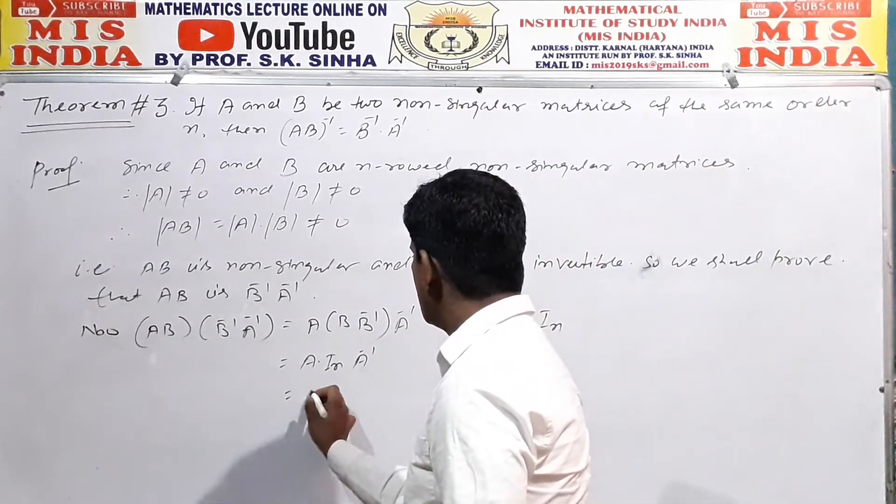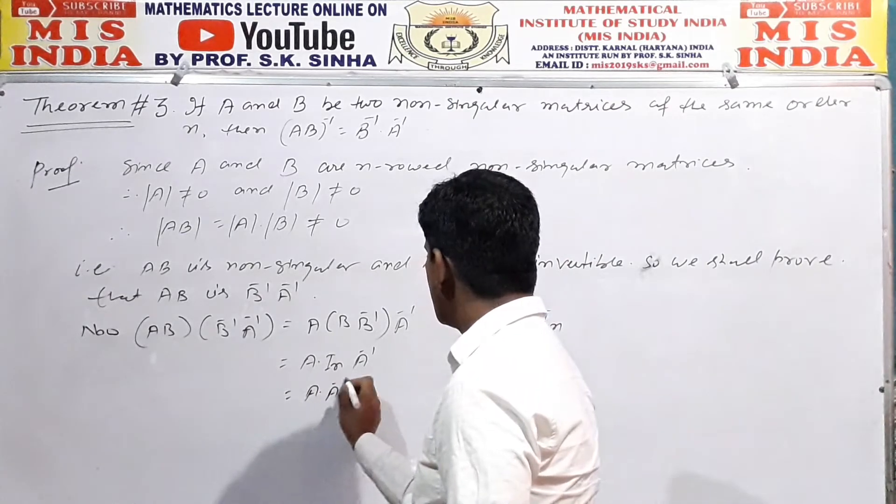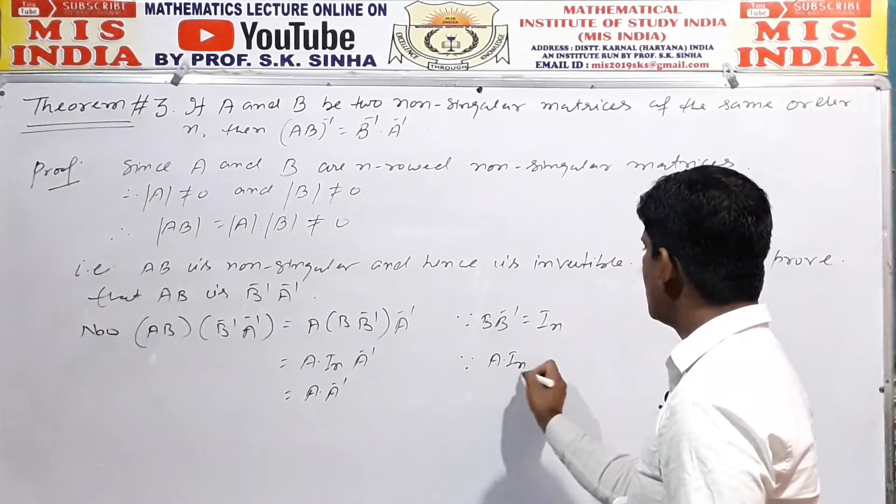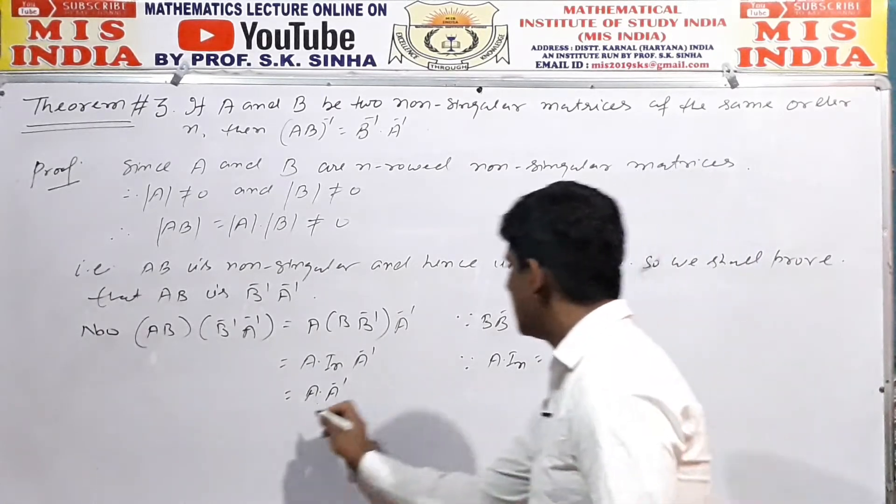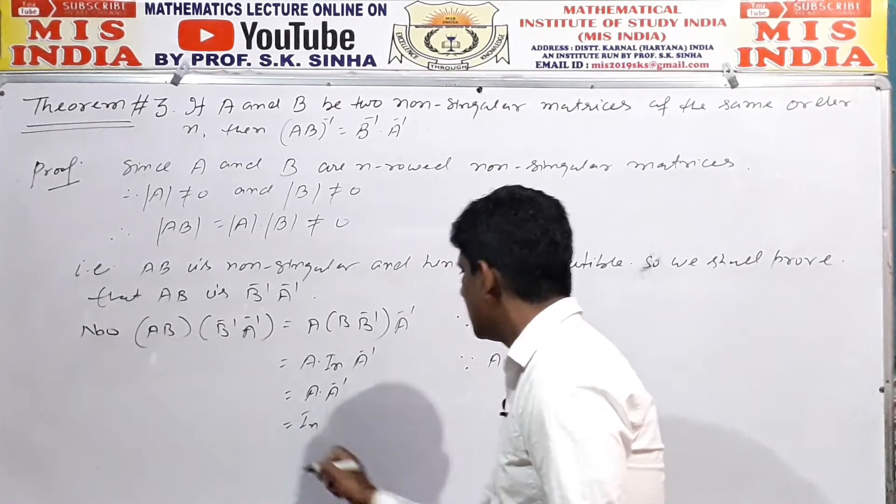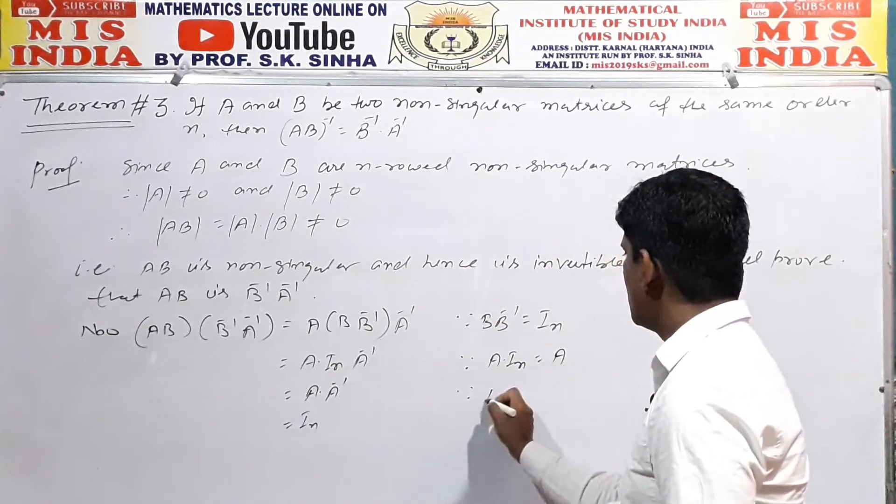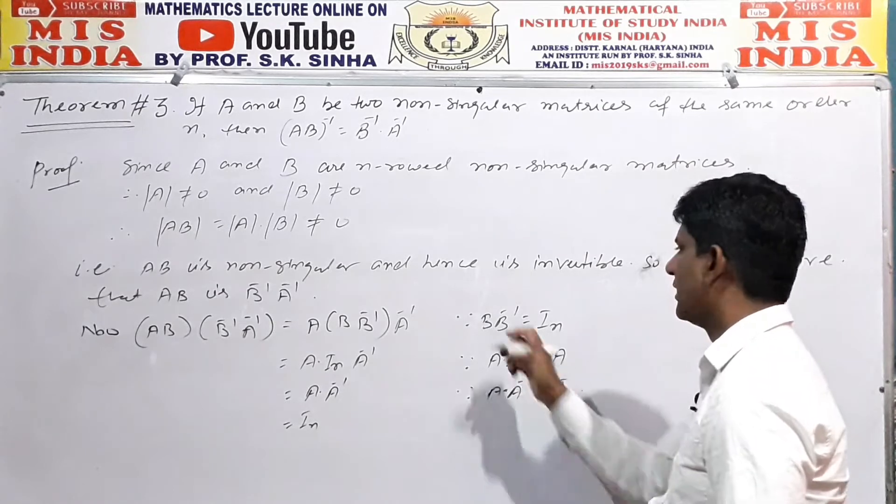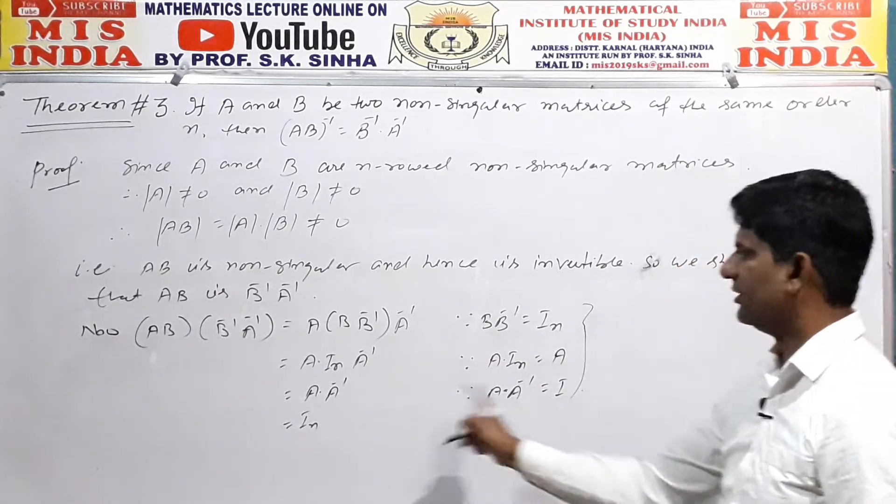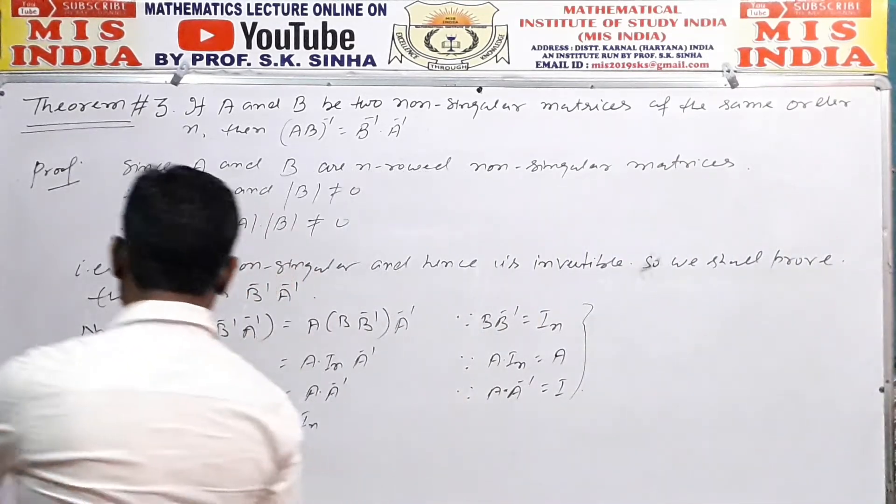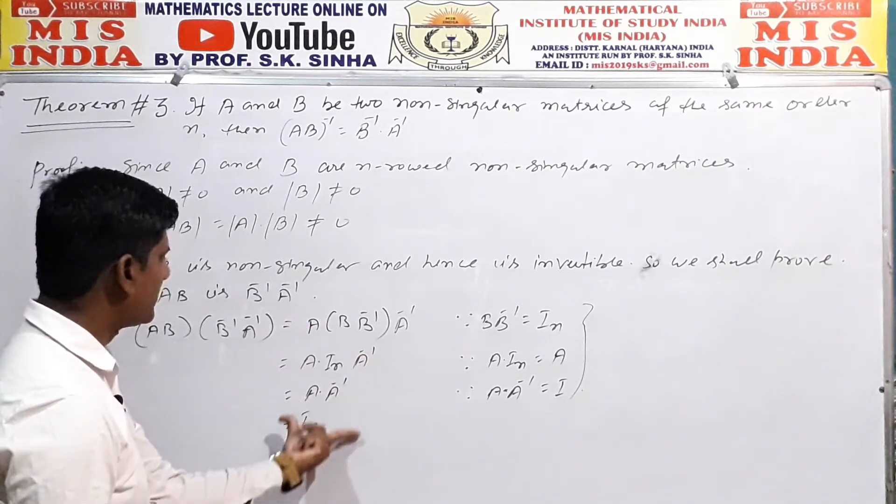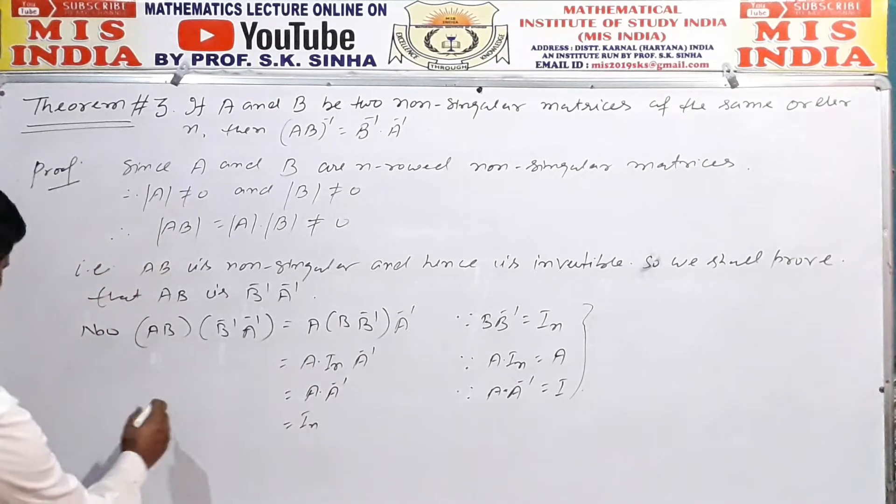And this is equal to A into A inverse. Because you know A into identity matrix is equal to A. And A into A inverse is equal to identity. So it means AB into B inverse A inverse, their product, is equal to identity.